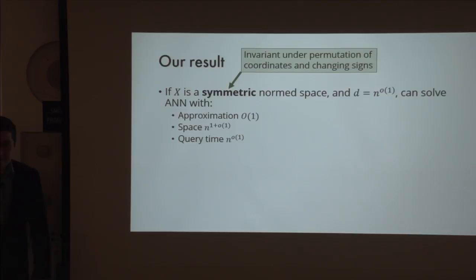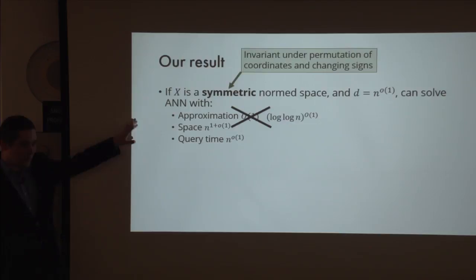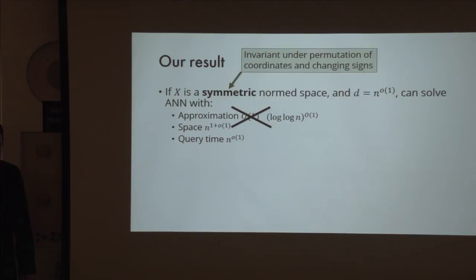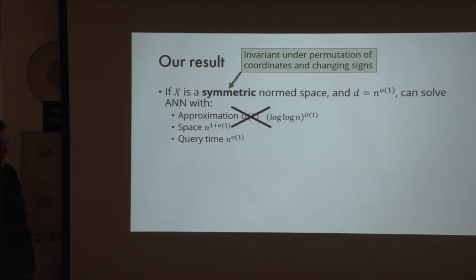For some norms it would be nice to get constant approximation, but for some norms—for example, L-infinity—we just don't know how to get any constant approximation. So there is no easy reduction from large to small approximation. The symmetry property means: if your convex body is symmetric enough, then approximate nearest neighbor search is easy.